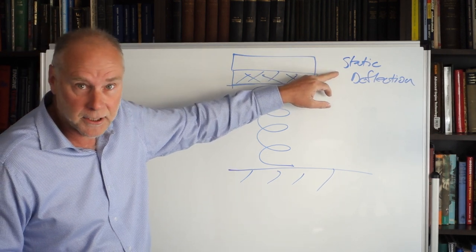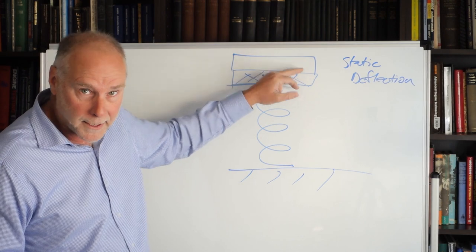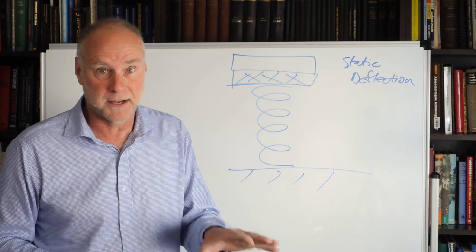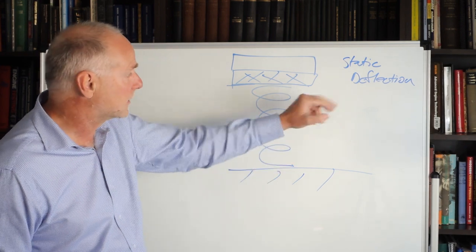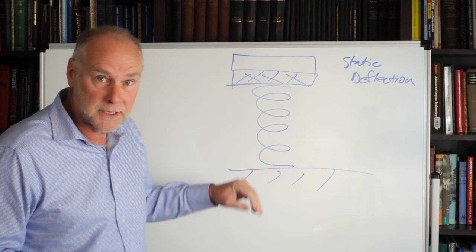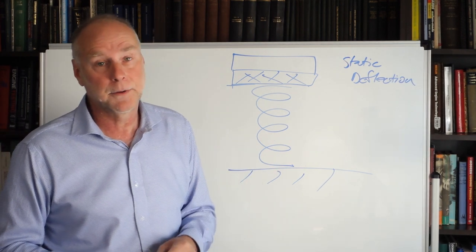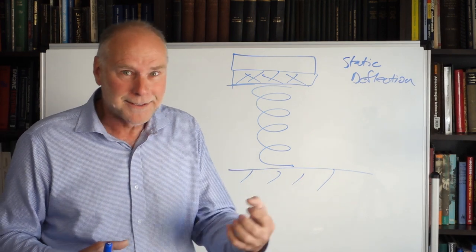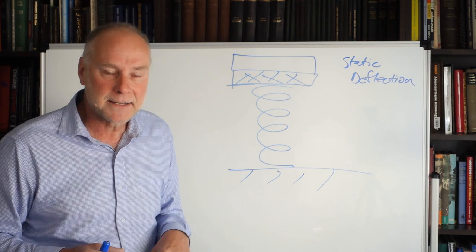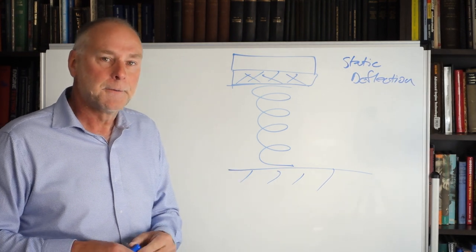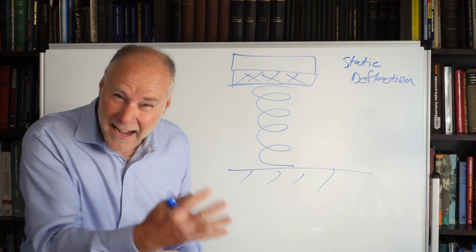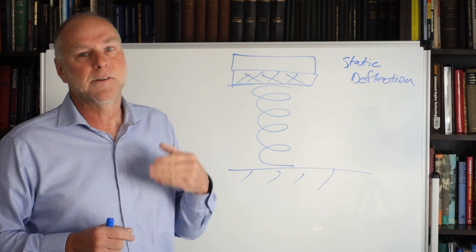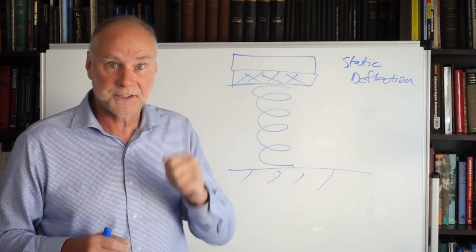The bigger the static deflection of the spring when the weight is put on it, the lower the natural frequency and therefore the softer the suspension is. The bigger the static deflection, the softer the system is in its behavior and therefore the lower the natural frequency. So straight away, we can see how important static deflection is, how much the system actually compresses when the weight is put on it, because that's a good indicator. In fact, there's a mathematical relationship between static deflection and natural frequency. So that's a good indicator of how stiff or soft the system actually is.